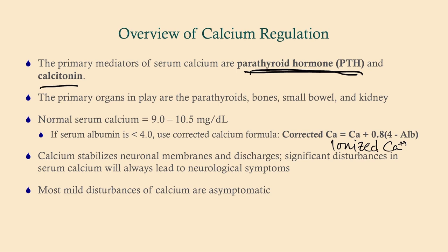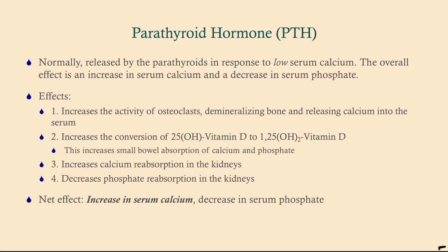Calcium stabilizes neuronal membrane discharges. With hypercalcemia, you have neuronal hypoactivity, whereas with hypocalcemia the neurons are spastic — firing when they shouldn't be. Most mild disturbances of calcium are asymptomatic, so a calcium of 10.7 will typically be found incidentally on labs rather than presenting with symptoms.